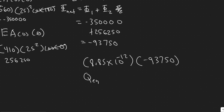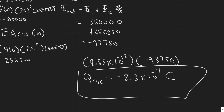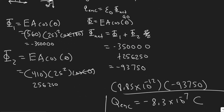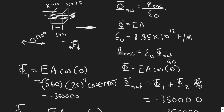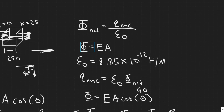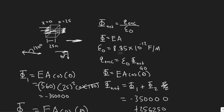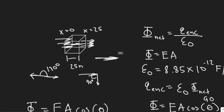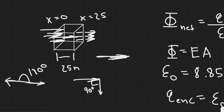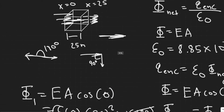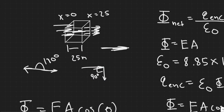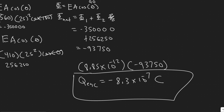The charge enclosed equals minus 8.3 times 10 to the minus 7 Coulombs. The main takeaways are: memorize the charge enclosed formula, understand the electric flux formula Φ = EA·cosθ, remember that leaving faces give positive flux and entering faces give negative flux, and faces with 90-degree angles between the field and their normal contribute zero and can be ignored.